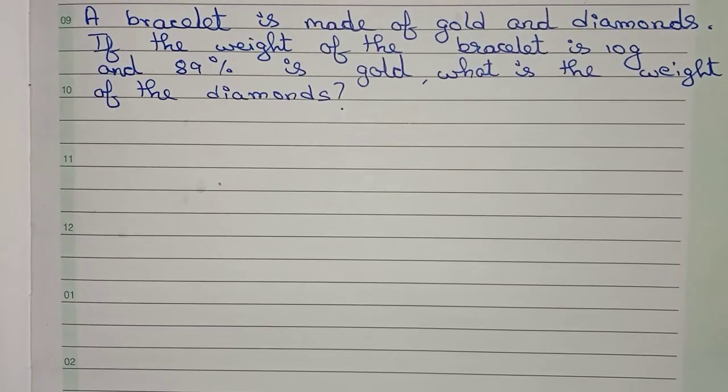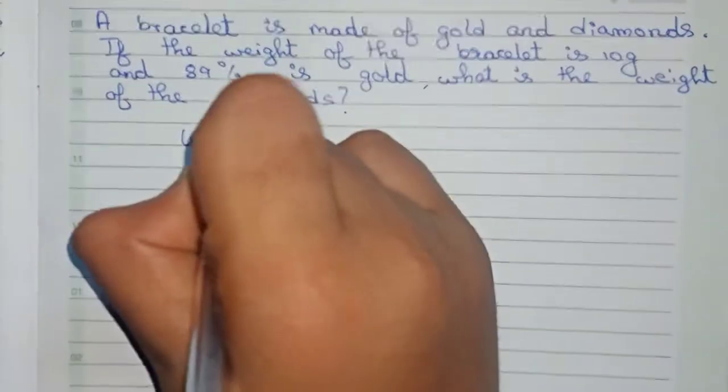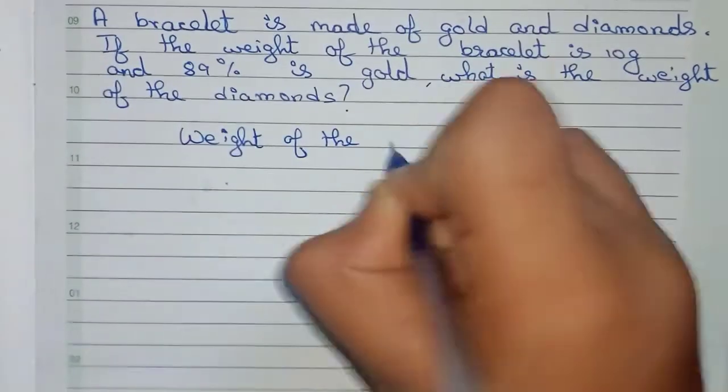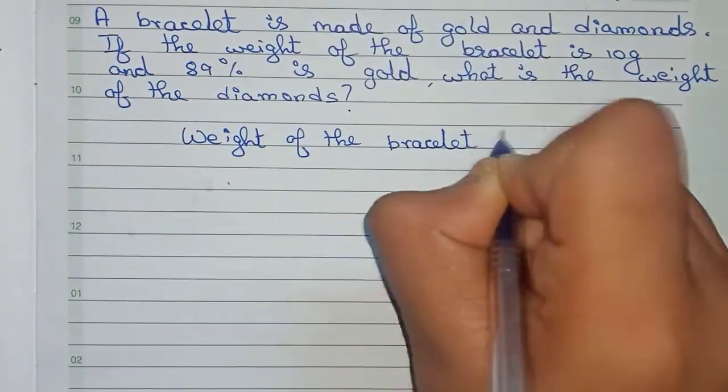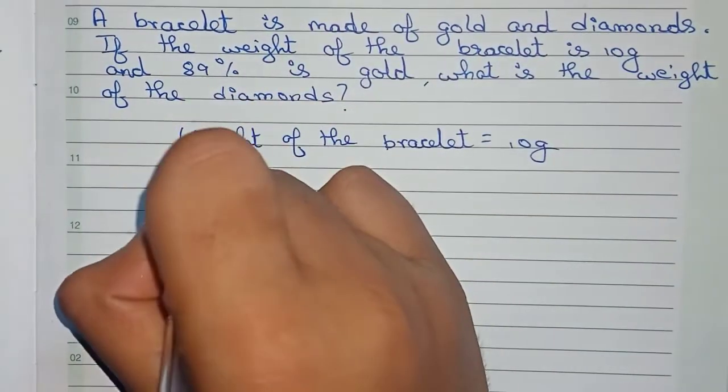So this is our question. Now let's solve this. First, we add weight of the bracelet, that is equal to 10 grams as given. So now percentage of gold, that is given, is 89%.